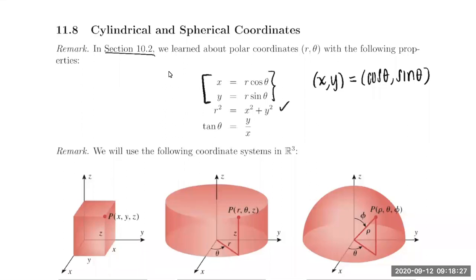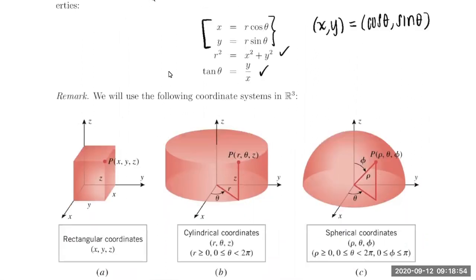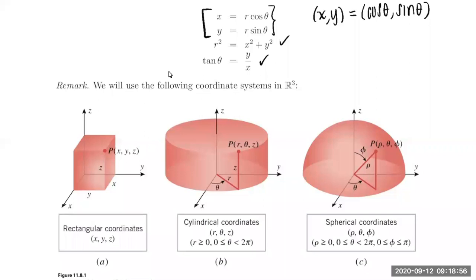We know that via the distance formula, r squared equals x squared plus y squared. We can also get a relationship between theta and the x and y coordinates using tangent of theta equals y over x. We can extend the polar coordinate system to three dimensions just by introducing the z variable, and z we're just going to leave exactly as z. There is no difference from rectangular coordinates to cylindrical coordinates as far as z is concerned.